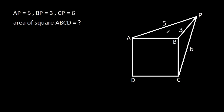In this video, we have been given that AP is 5, BP is 3 and CP is 6. We have to find the area of square ABCD.